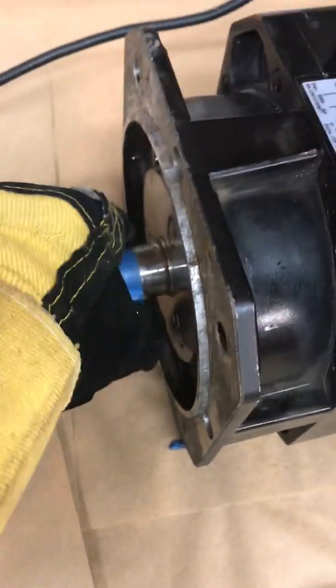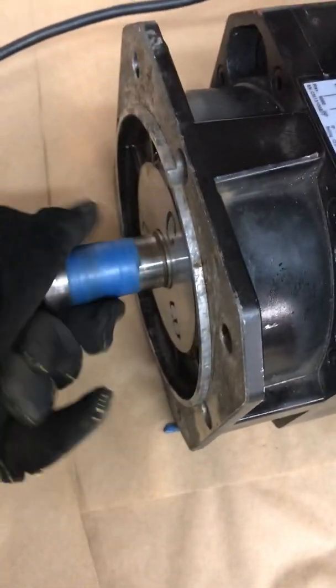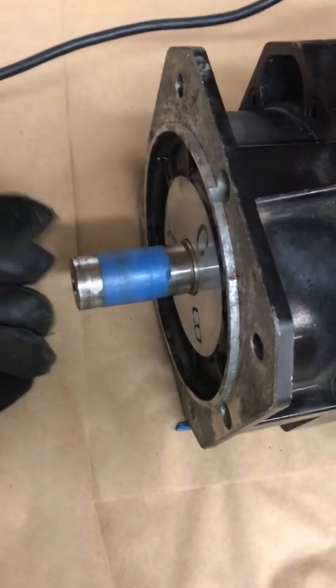See the shaft turning? This is constant torque mode. Look at there. I can turn it backwards. That's constant torque mode.